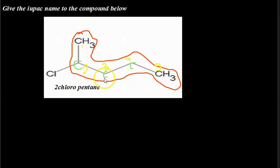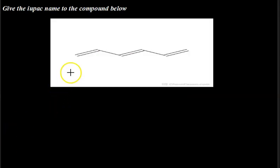We have another compound to name, and if you observe carefully there is a major difference between this compound and the one we previously named. This compound is not an alkane — it is an alkene because it has not just one double bond but three double bonds. Any compound that has double bonds is named as an alkene with an '-ene' ending. We are going to start by locating where the carbons are in this skeletal organic compound.